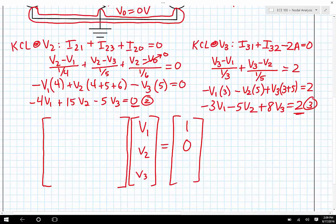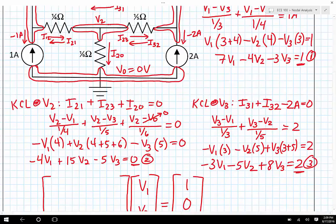Notice, by the way, that every element in that right-hand side vector comes from a current source. So here was a current source of 1 amp, here was a current source of 2 amps, and then there was no current source attached to node number 2.